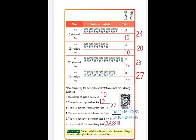Fifth question: total number of boys from class 1 to 4. Add all boys: class 1 has 10, class 2 has 10, class 3 has 12, class 4 has 14. Ten plus 10 plus 12 plus 14 gives 46 boys. Sixth question: which class has more strength? Class 3 has 28 students, which is the most — so the answer is class 3.